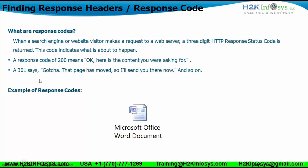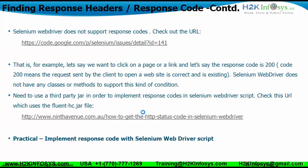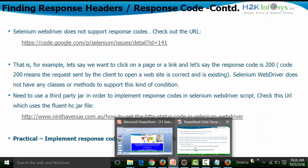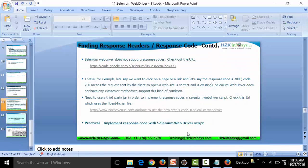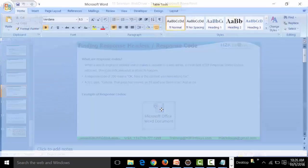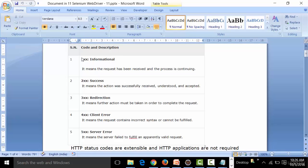Another example is response code 301. If the server sends a response code of 301, it precisely means the page has been moved from its present location to some other location, and it will redirect you to that new location. There are many other response codes available in this reference document, covering one-series, two-series, and three-series response codes.